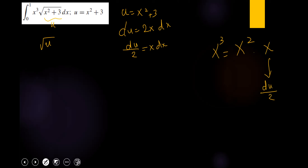Now I want to change x squared. Since u equals x squared plus 3, rearranging gives us u minus 3 equals x squared. So I can substitute x squared with u minus 3.